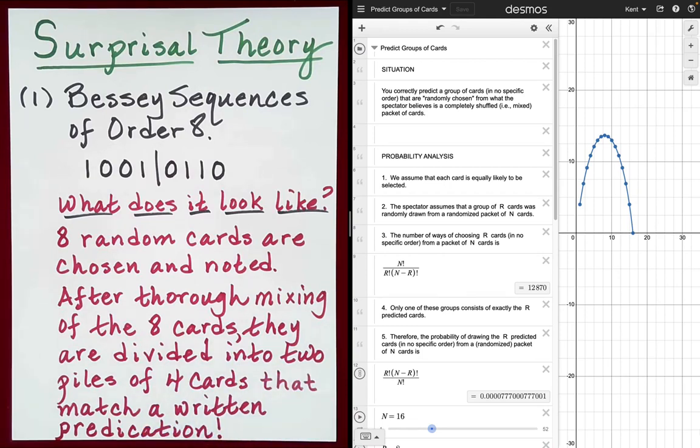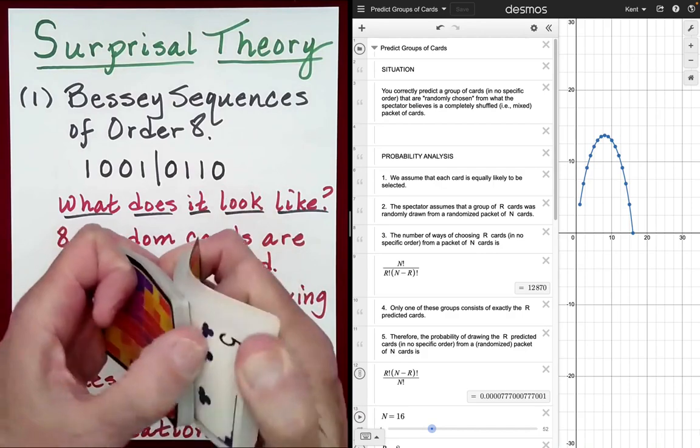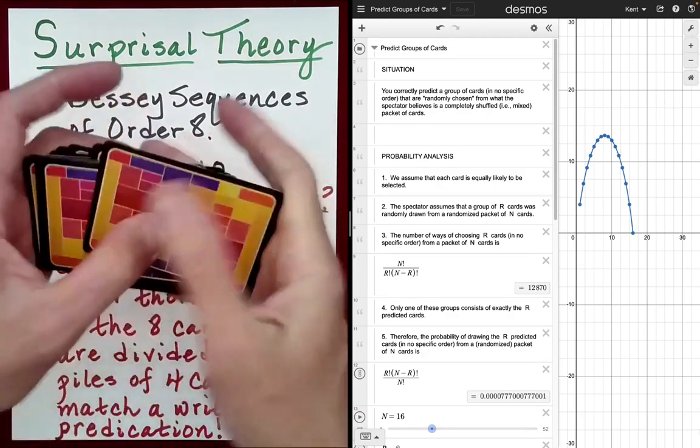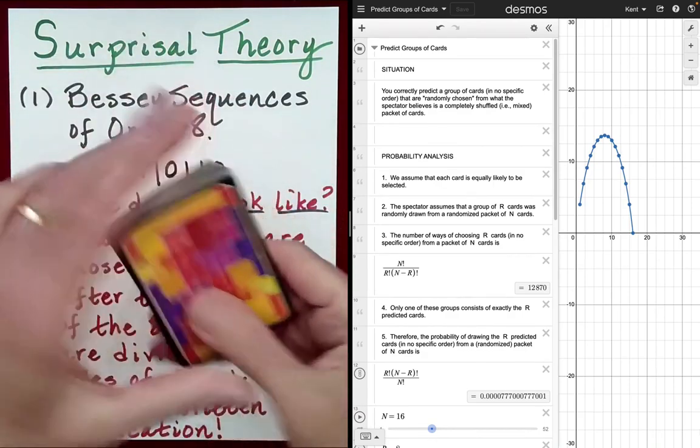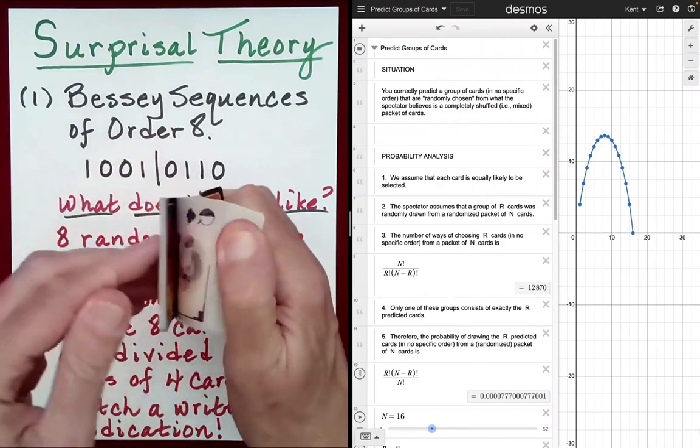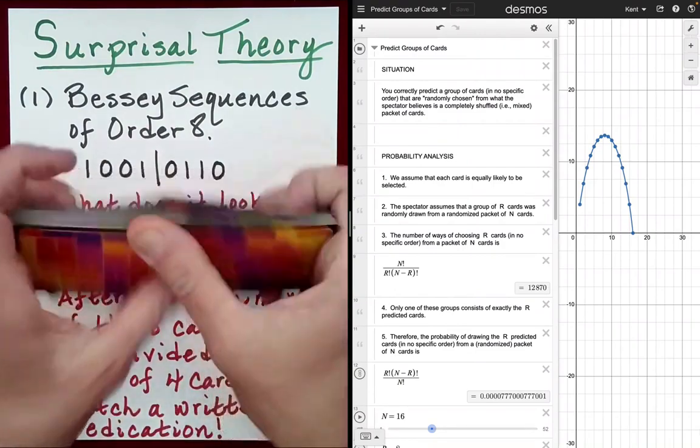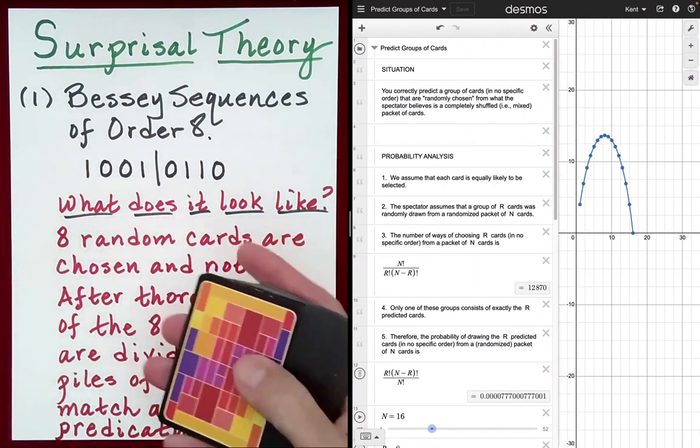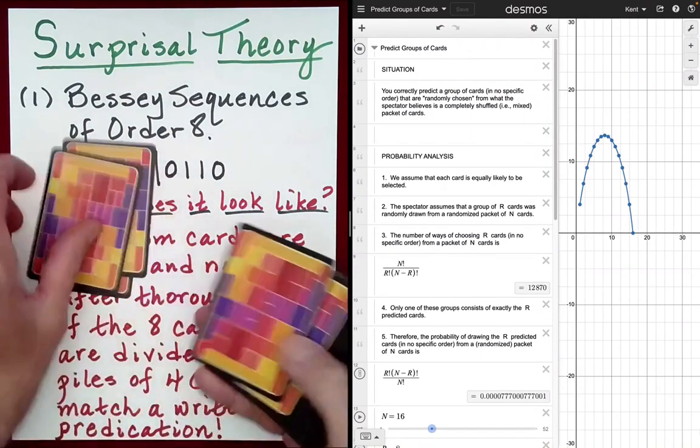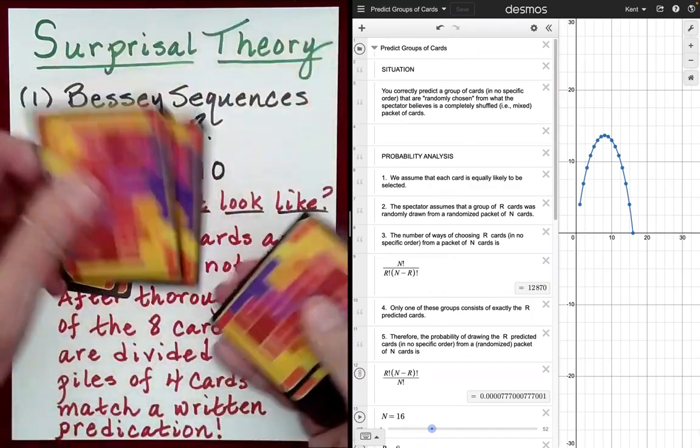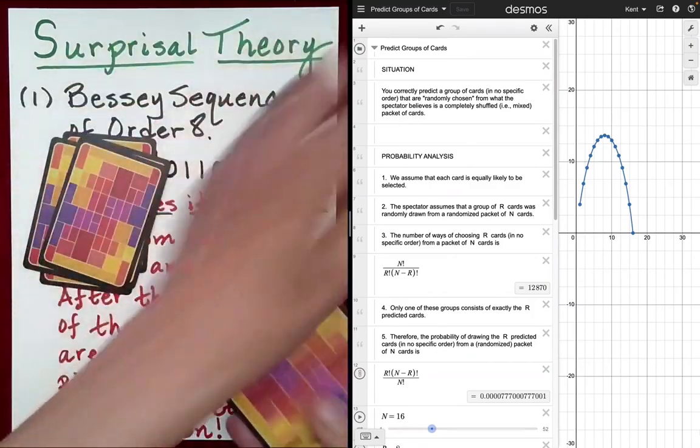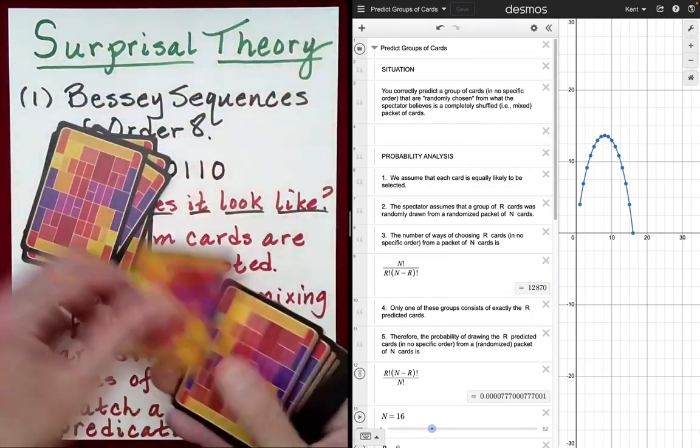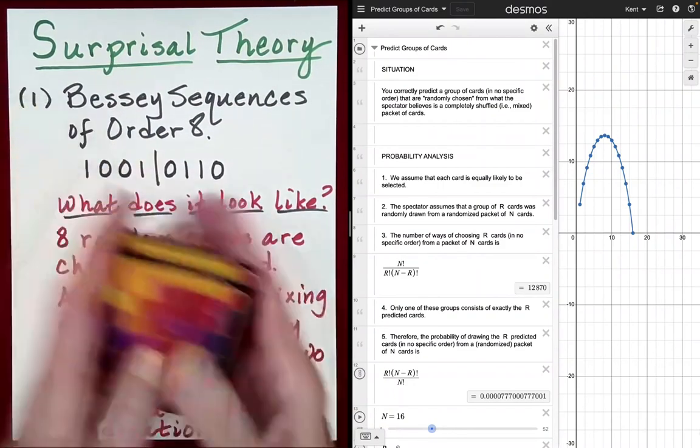So let me just show you what it would look like. The idea is that you would start with eight random cards in this particular rendition of a performance using Bessey sequences. The spectator is free to mix the cards as much as they like. These are truly eight random cards. So you just put out eight random cards, maybe we'll take some from different places. Okay, there we go. We have eight cards.